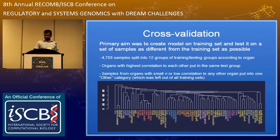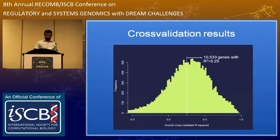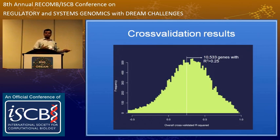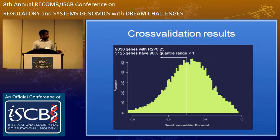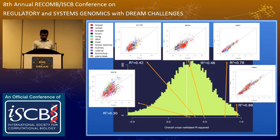Once I do the cross-validation — leaving out the test set, creating the entire network, selecting genes and sources de novo — I get a cross-validated R-squared. For about 10,500 genes I get R-squared greater than 0.25, which is actually not bad. About half the genes get a bad R-squared below 0.25, but many of those genes actually have a very low range of expression — I'll get to that point later.